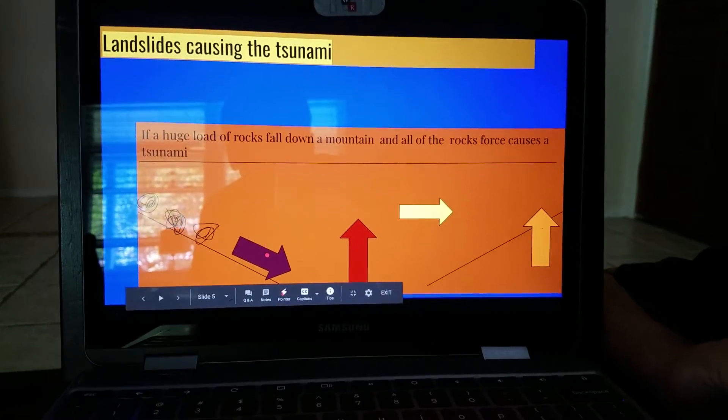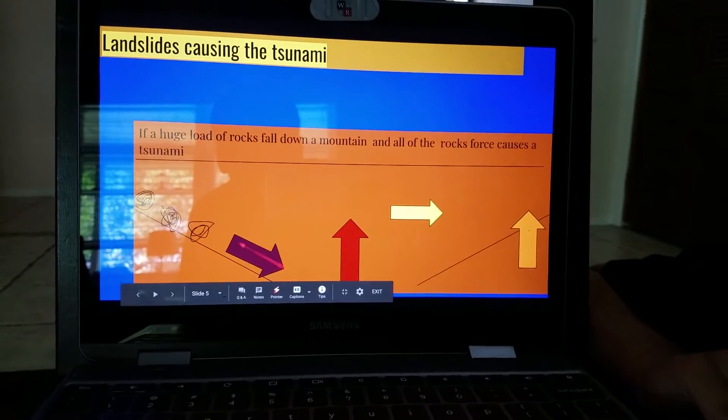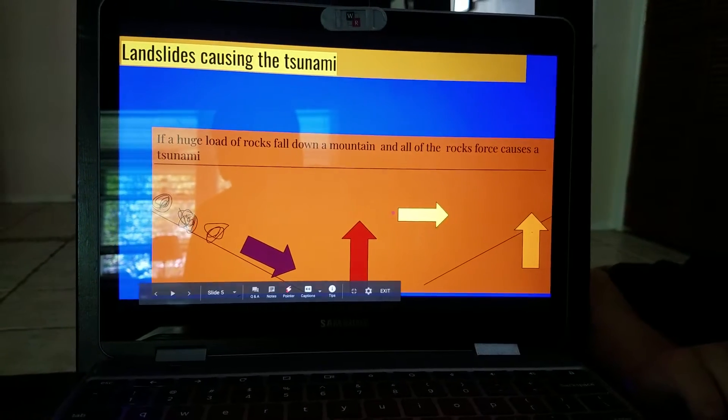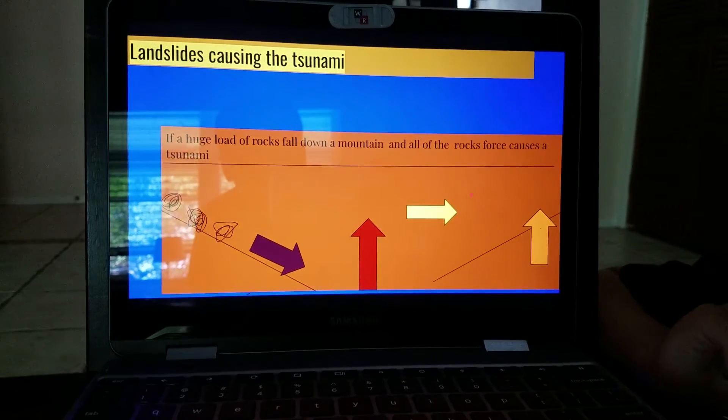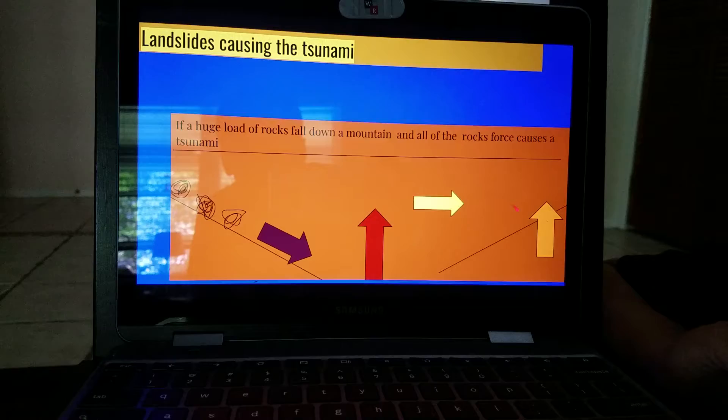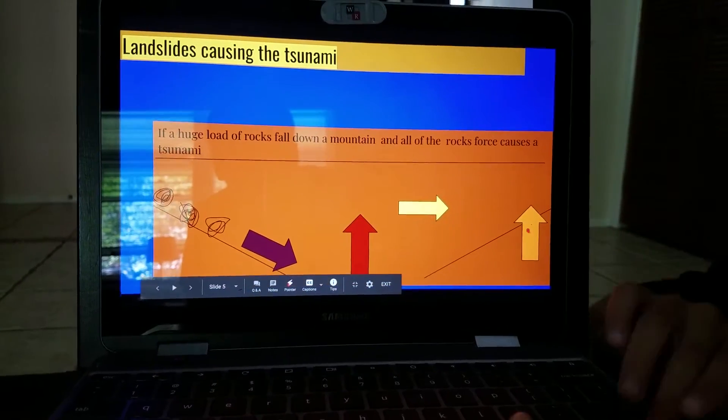So this is the rocks falling from the landslide. Then this is the pressure of all the rocks falling. Then you have the movement of water going in all directions. And then this is the pressure of land.